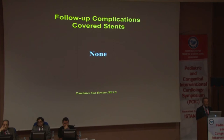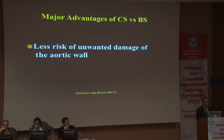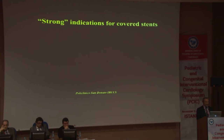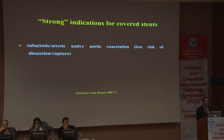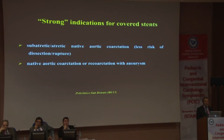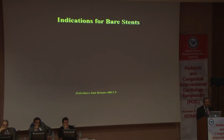The major advantage of cover stents versus bare metal stents is clearly a lower risk of unwanted damage to the aortic wall. Strong indications for cover stents include sub-atretic or atretic native coarctation — because of significantly lower risk of dissection or rupture — or native or recurring coarctation associated with aneurysm, aortic orientation, and PDA that can be occluded at the same time when implanting the cover stent.